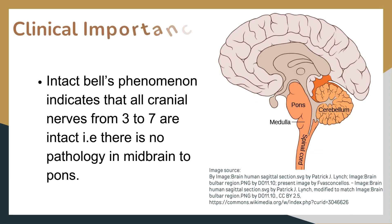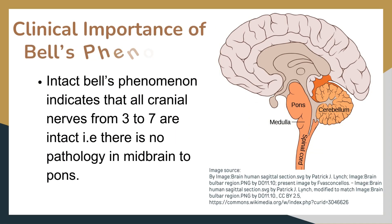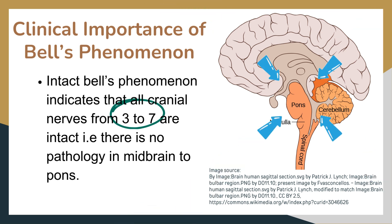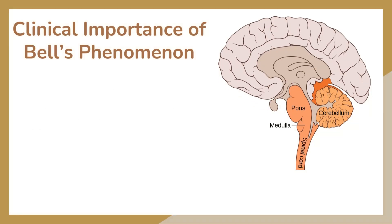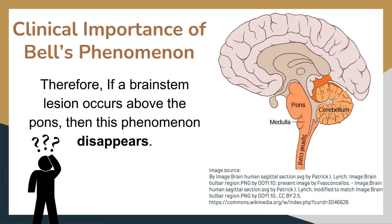Clinical importance of Bell's phenomenon. Intact Bell's phenomenon indicates that all cranial nerves from 3 to 7 are intact, meaning there is no pathology in the midbrain to pons. Therefore, if a brainstem lesion occurs above the pons, then this phenomenon disappears.